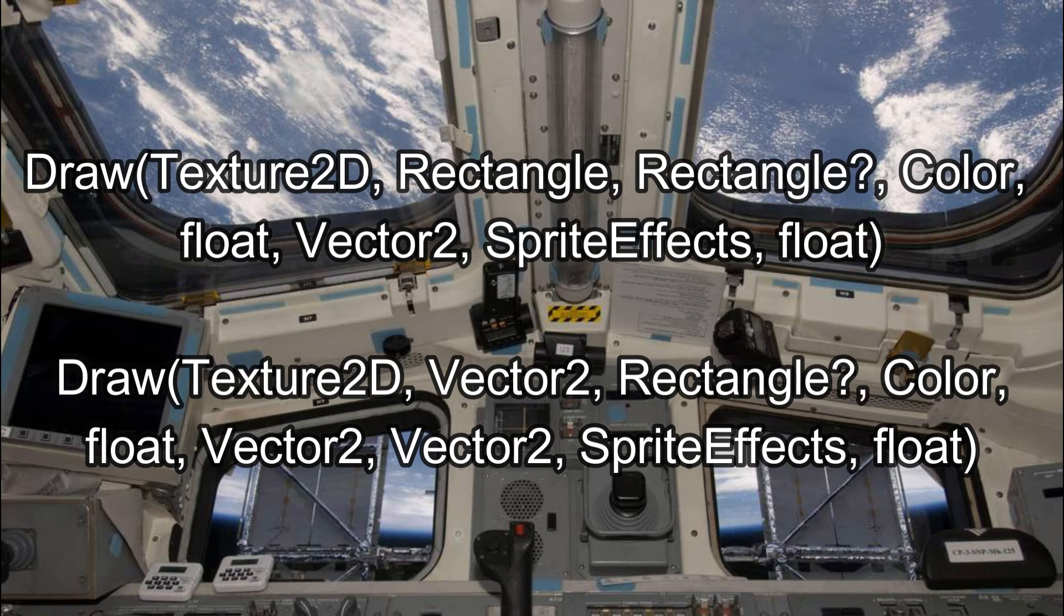Finally, we have the two most complicated overrides. They add on four more parameters. The first two are the angle and point in which you rotate around for a rotation. The angle is always in radians.